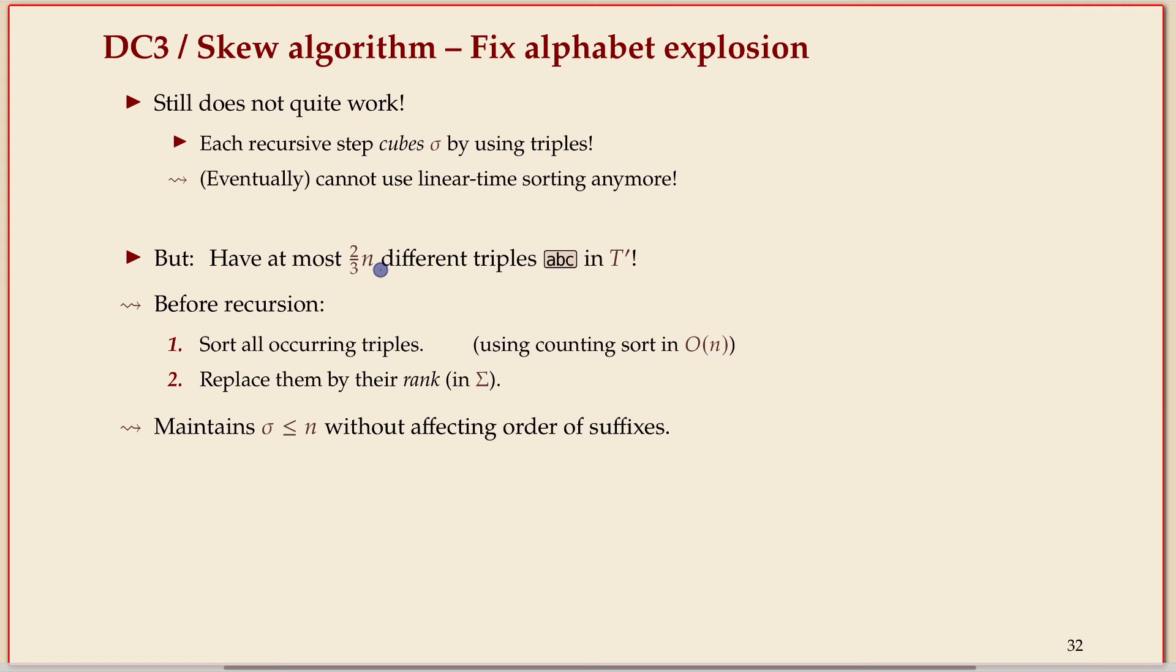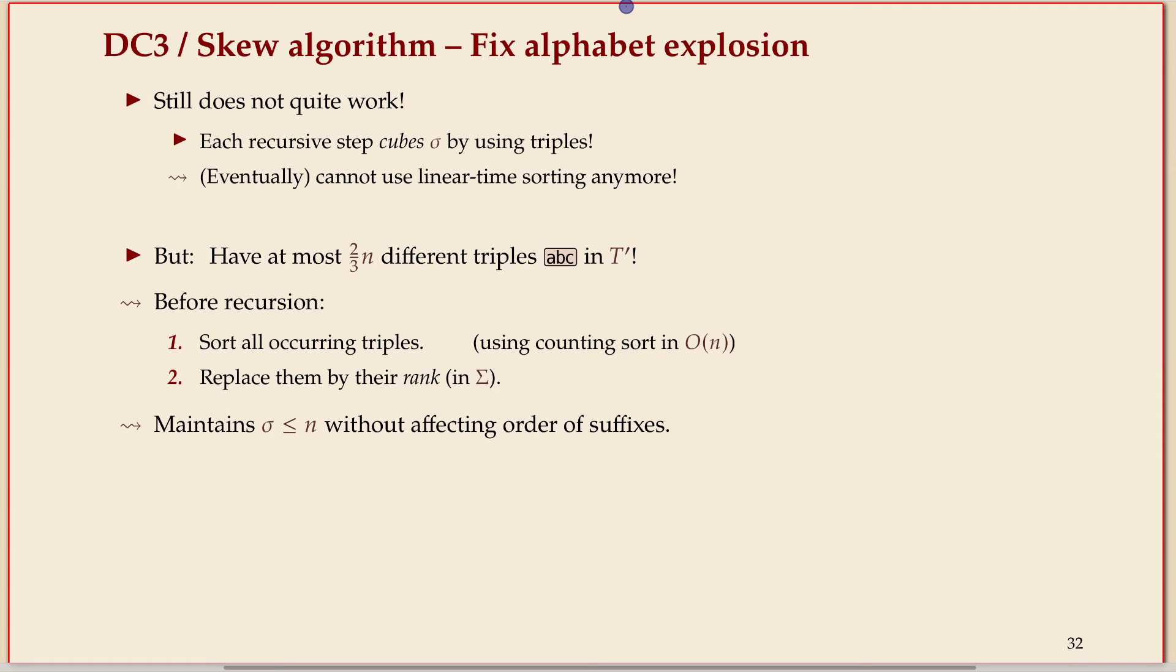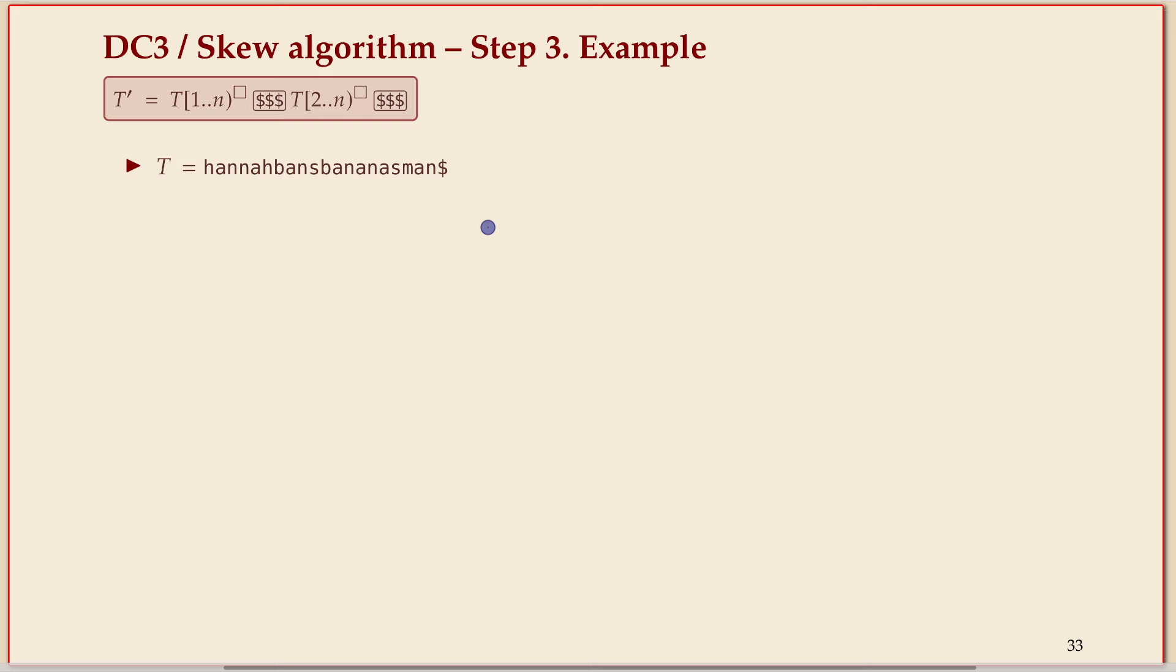And so if it has length two-thirds of n, it can't possibly have more different characters than two-thirds n. So instead of using those as they are, we rank reduce them, which means we sort all the occurring triples and then replace them by their rank. If you do this, you never have more characters than the string is long, and that means we can keep sigma small, O of n.